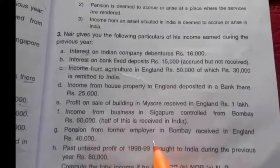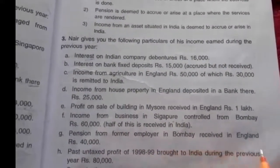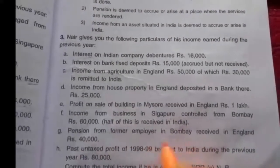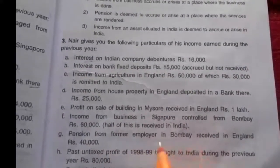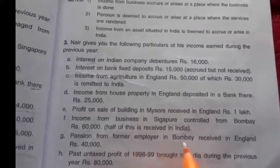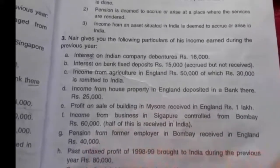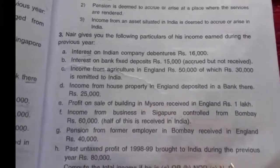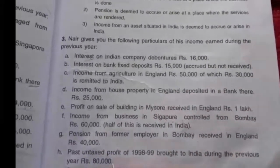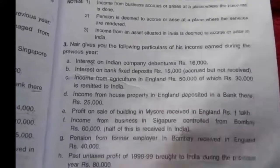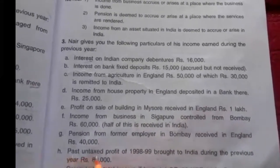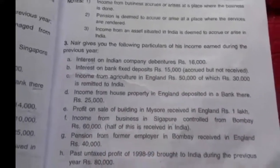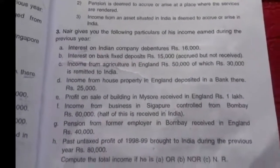Seventh, pension from a former employer in Bombay received in England Rs. 40,000. Since the employer is in Bombay, the income accrued in India, so Rs. 40,000 is taxable in all three cases. Eighth, past untaxed profit of 1998–99 brought into India during the previous year — this does not relate to the current previous year, so it is not taxable in any of the three cases. Try to solve this problem yourself.